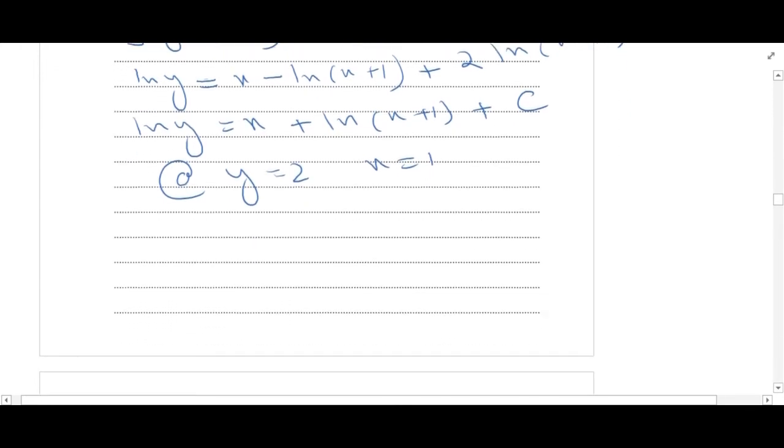That would become ln of 2 is equal to 1 plus ln of 2 plus c. Then, c would be equal to negative 1.